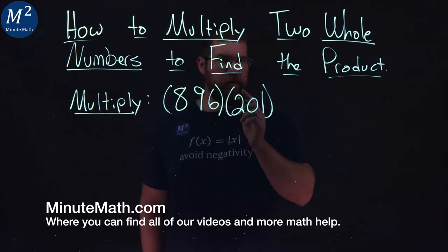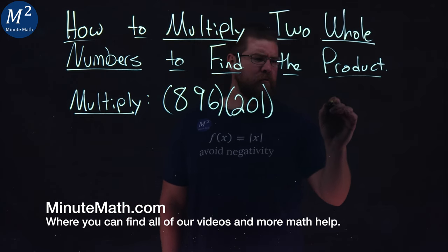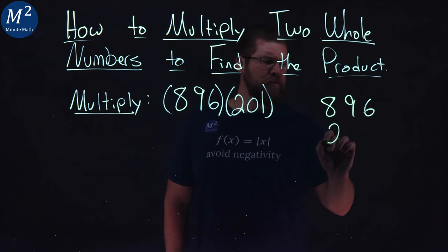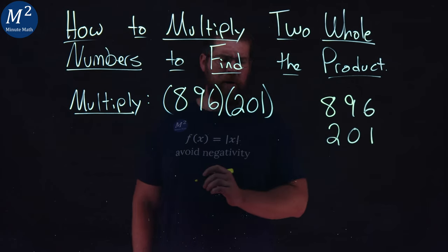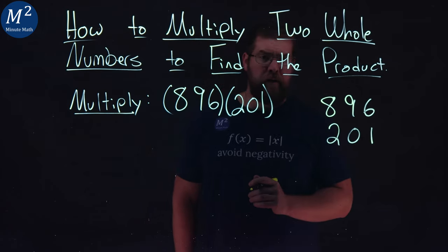We're going to multiply this using the traditional method. I first write my 896 and then my 201 underneath of it. Make sure my place values line up.